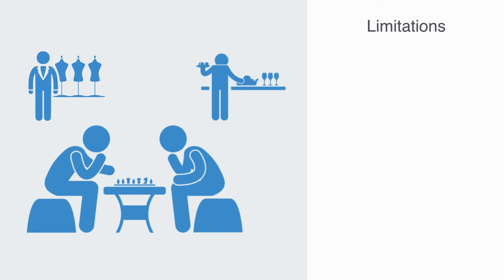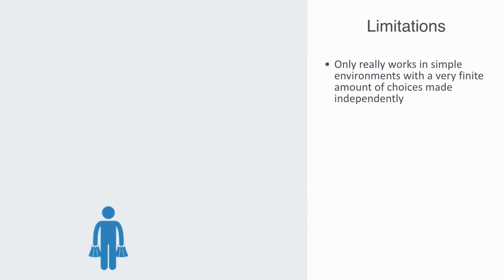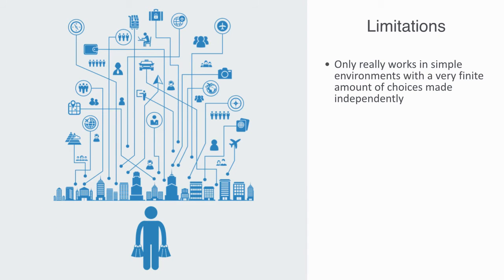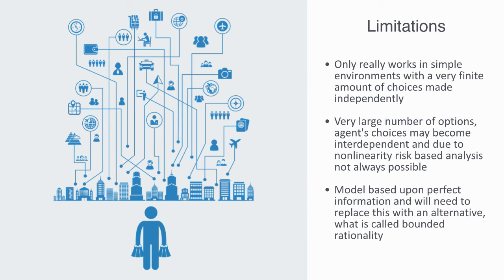So the standard model is based upon the idea of complete information, but it only really works in simple environments, where there is a very finite amount of choices, and the agents are making choices independently. But these properties don't always hold. In more complex environments, there may be a very large number of options. Agents' choices may be interdependent, and due to non-linearity and feedback, a risk-based analysis of the future may break down. In such cases, we will not be able to use a model based on perfect information, and we will need to replace it with an alternative, what is called bounded rationality.